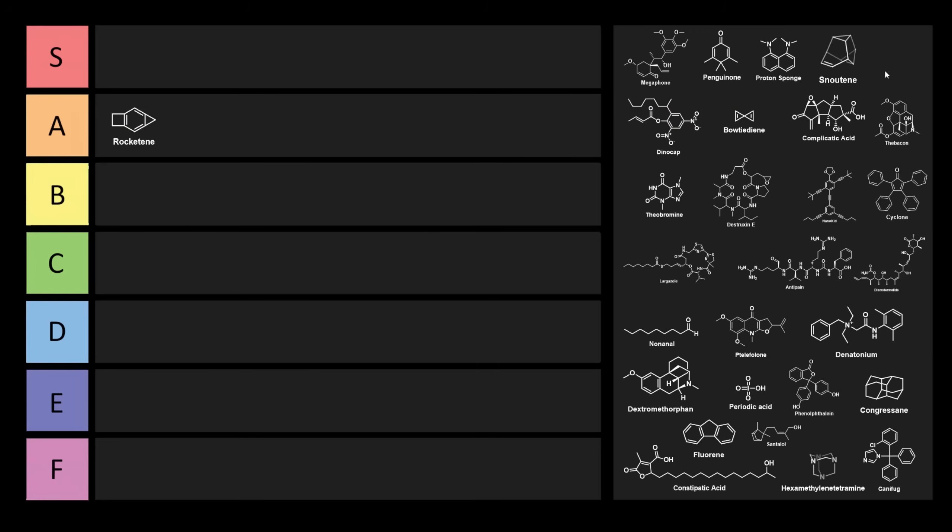Now a similar one that's a little bit upsetting is Snoutene. Snoutene has this interesting 3D structure, it's hard to draw with our typical 2D drawing techniques. Although I did it in 3D so you can kind of get an idea of what it looks like. This is supposed to somehow resemble a pig's snout, and I think that this is terrible. This can go right into S tier.